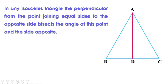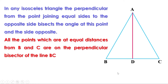We have seen that A is a point which is at equal distance from B and C, and it lies on this perpendicular bisector AD. Just like this, all the points which are at equal distances from B and C are on this perpendicular bisector AD. Suppose you have to find a point which is at equal distance from B and C on the other side — you can extend AD and that point is also on this line. So we can say all the points which are at equal distances from B and C lie on the perpendicular bisector of line BC.